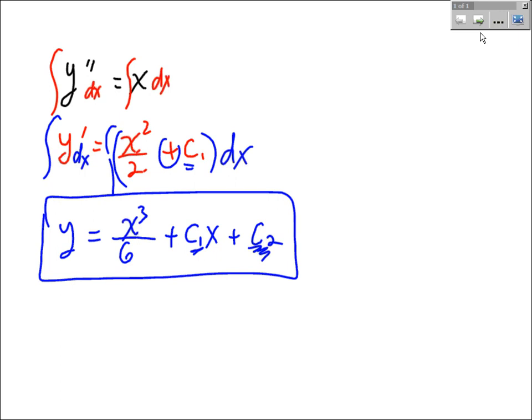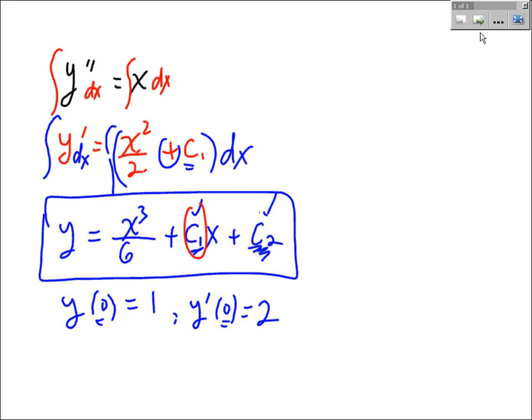If you are given some initial conditions, like y of 0 equals 1, or y prime of 0 equals 2 — it doesn't always have to be at 0 — you can then find those constants. Another comment: if there are two constants, you need to be given two pieces of information.